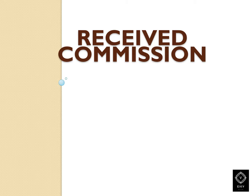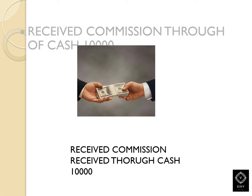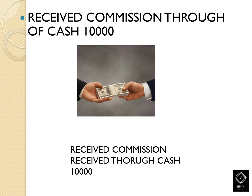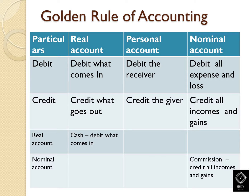Welcome to the video. Today I'm going to explain how to create a journal entry when you receive a commission. In this context, I refer to commission as an income. The scenario is: received commission through cash, rupees 10,000.